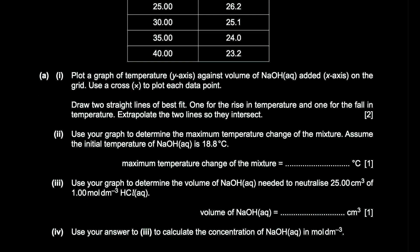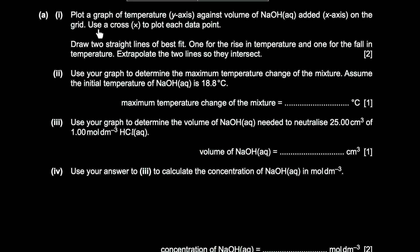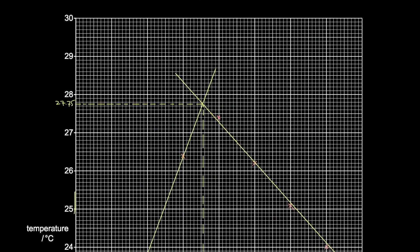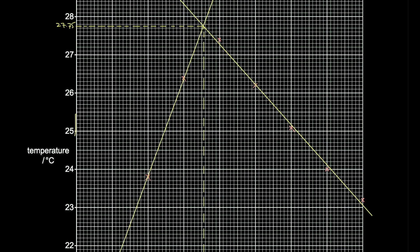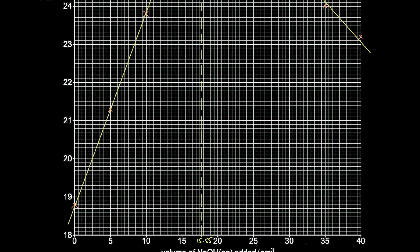Plot a graph of temperature against volume of sodium hydroxide, using a cross for each data point, then draw two straight lines of best fit — one for the rise and one for the fall in temperature. Extrapolate the two lines so they intersect. I've plotted the points and drawn the lines; the intersection gives a maximum temperature of 27.75°C at a volume of 15.55 cm³.